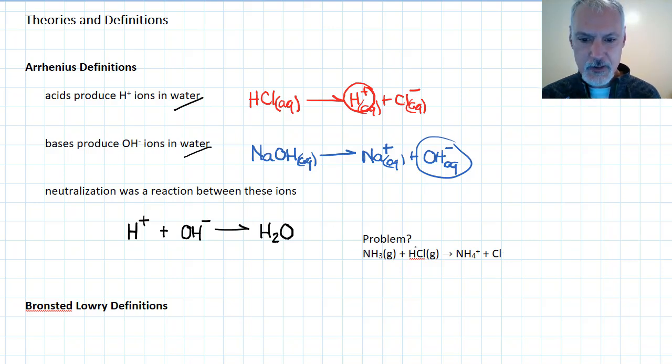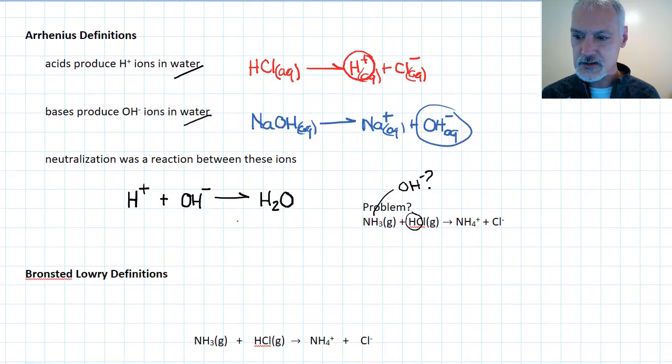Now we can see why this one's an acid because it has a hydrogen ion, but where's the OH ion in ammonia? So this reaction, although identified as neutralization, didn't involve the presence of these ions and it didn't involve the presence of water. So we had to revisit the definition of an acid and a base, something that expanded to cover this situation.